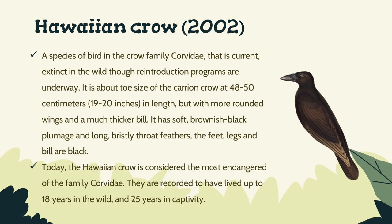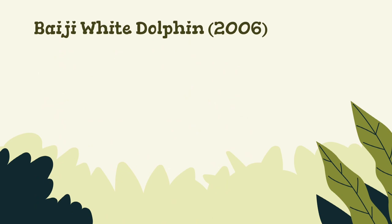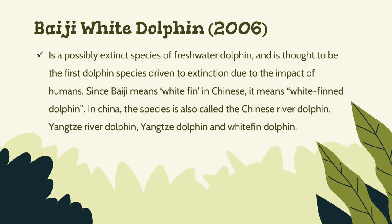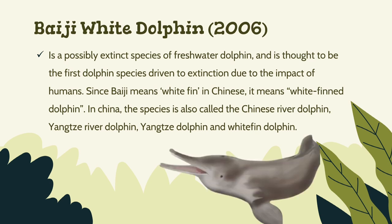They are recorded to have lived up to 18 years in the wild and 25 years in captivity. Baiji White Dolphin, in 2006. It is a possibly extinct species of freshwater dolphin and is thought to be the first dolphin species driven to extinction due to the impact of humans. Since 'Baiji' means 'white fin' in Chinese, it is also called the white fin dolphin. In China, this species is also called the Chinese River Dolphin, Yangtze River Dolphin, Yangtze Dolphin, and White Fin Dolphin.